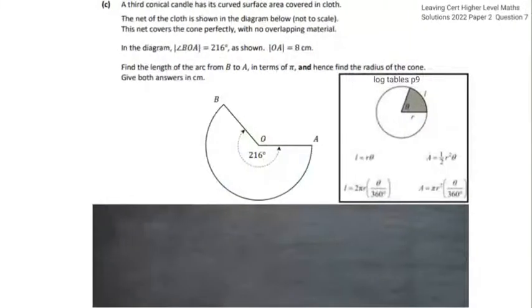Onto part C now. And we have a net of a cone and it's flattened out. So they're calling it the curved surface area. But that's the net, it's a flattened cone. So first of all we have to get the length of arc and we're going to use this formula here from page 9 of the log tables. And the second part we're going to find the original radius of the cone.